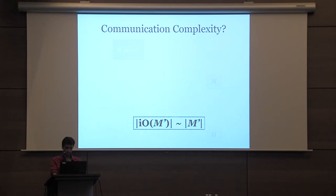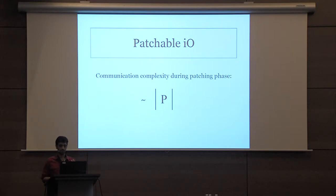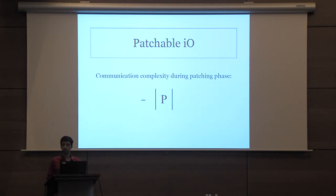This software could be several gigabytes in size, so the communication complexity during every patching would be several gigabytes. This is not very reasonable. So in order to handle this issue, we define the notion of patchable IO. In particular, we want the efficiency requirement that the communication complexity during the patching phase should be proportional to the size of the patch.